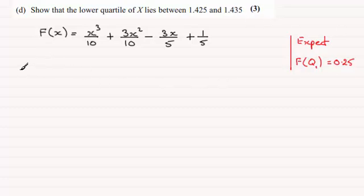So let's start off then with working out what f of 1.425 is. So if you just substitute this into here, you should find you get 0.2435 and so on.